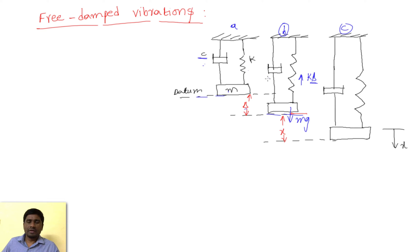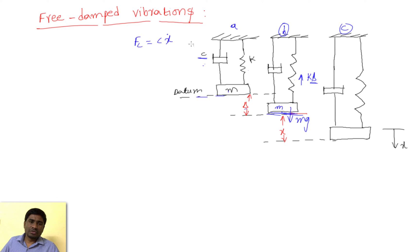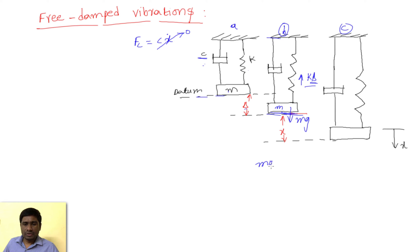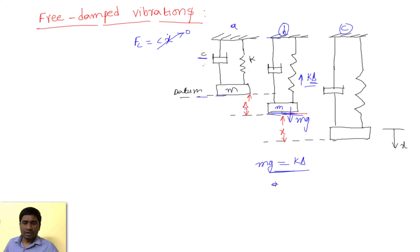For the spring-damper system, the force in the damper fc equals c·ẋ, where ẋ is velocity. But at the equilibrium position, the mass is not moving — it is at rest — so ẋ = 0 at equilibrium. At equilibrium, only the spring force compensates gravity: mg = k·delta. While deriving the differential equation, we can therefore neglect the g and delta terms.